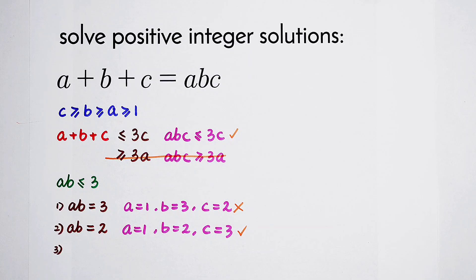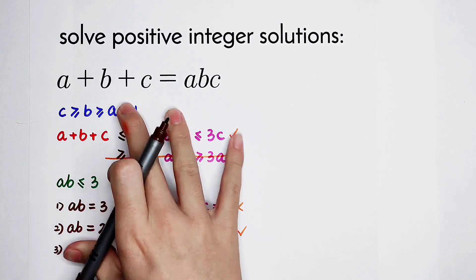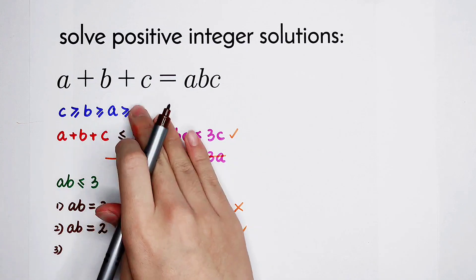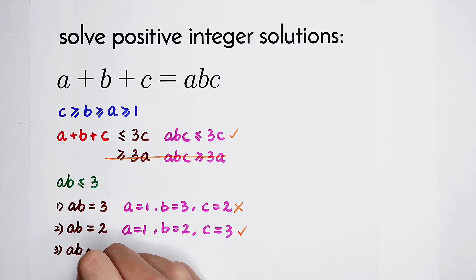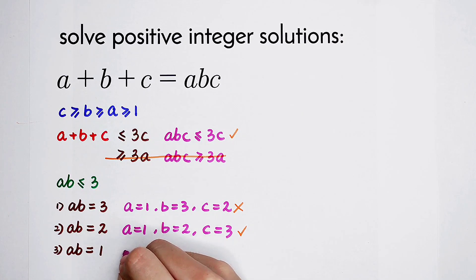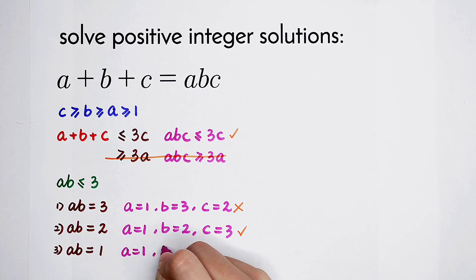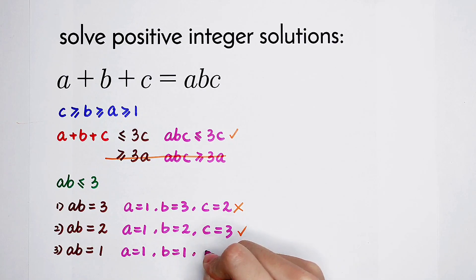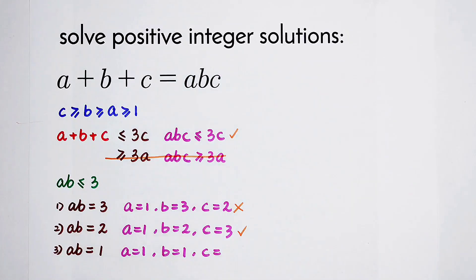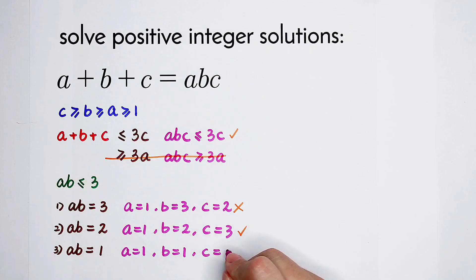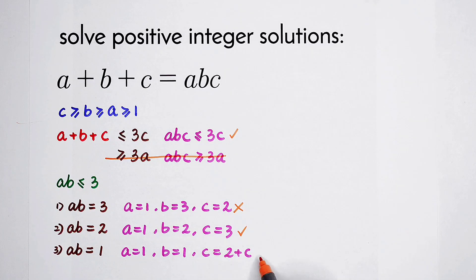The third case is the last case: AB = 1. Since A ≥ 1 and B ≥ 1, we get A = 1 and B = 1. Then the right-hand side is 1 times 1 times C, which equals C. The left-hand side is 1 plus 1 plus C, which is 2 plus C. So C = 2 plus C — this cannot exist. The third case is deleted.